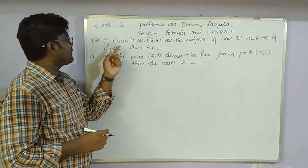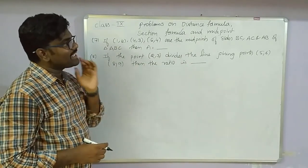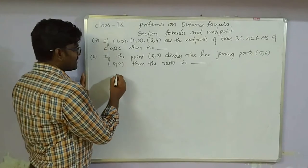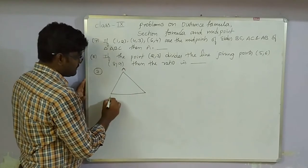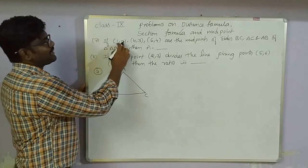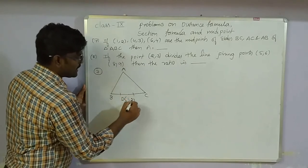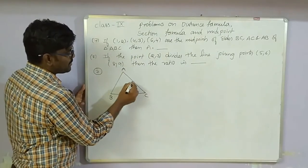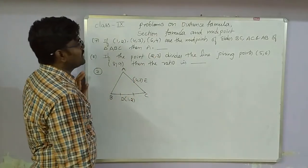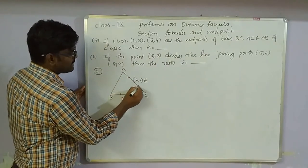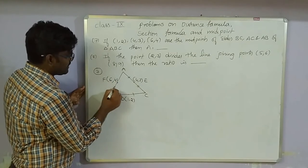Seventh question: if (1,2), (4,3), and (6,4) are midpoints of sides BC, AC, and AB of triangle ABC respectively. Let D=(1,2) be midpoint of BC, E=(4,3) be midpoint of AC, and F=(6,4) be midpoint of AB.